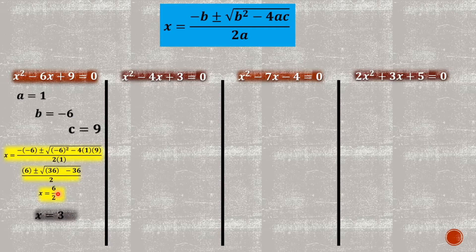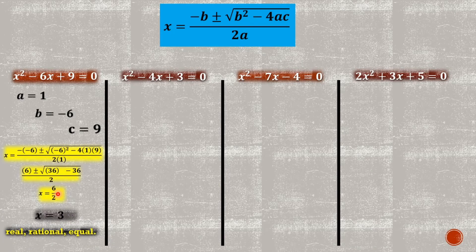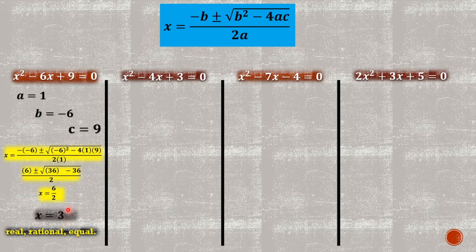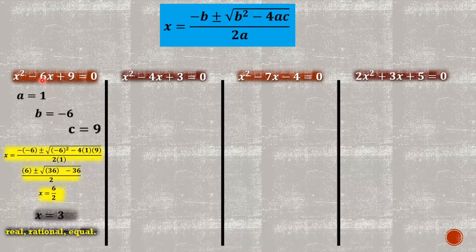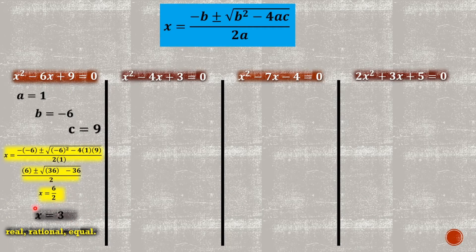We simplify six over two, so the value of X is equal to three. Based on the discriminant, this example is real, rational, and equal. Since X equals three is the only root, it confirms that the roots are real, rational, and equal — which matches what the discriminant predicted. Let us proceed to problem number two.